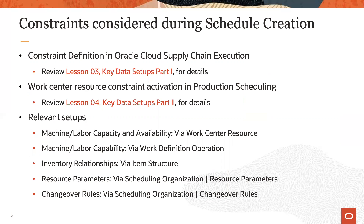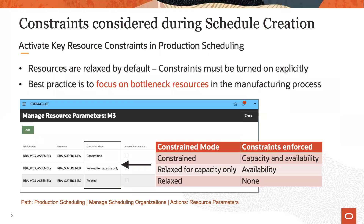Additional data maintenance within production scheduling takes care of changeover rules as well as the activation of resource constraints. Best practice in finite capacity scheduling is to focus on key bottleneck resources and have only those drive the schedule results. Therefore, all work center resources will by default be treated as relaxed, meaning that calendar and capacity constraints are not respected.